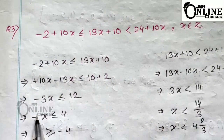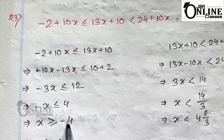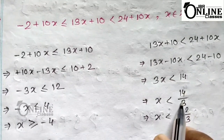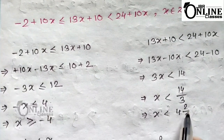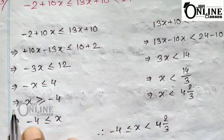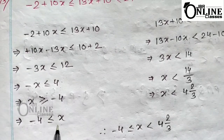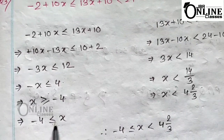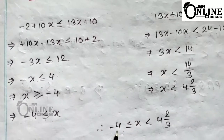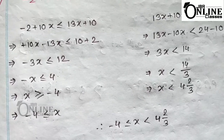From the first part you will get −x ≤ 4, so x ≥ −4. From the second part you will get x ≤ 14/3, which is x < 4⅔. Since x ≥ −4 can be written as −4 ≤ x, you combine both inequations to get −4 ≤ x < 4⅔ as the final solution.